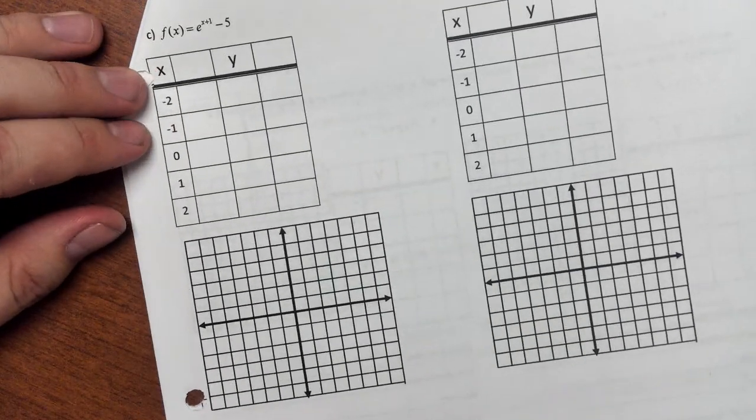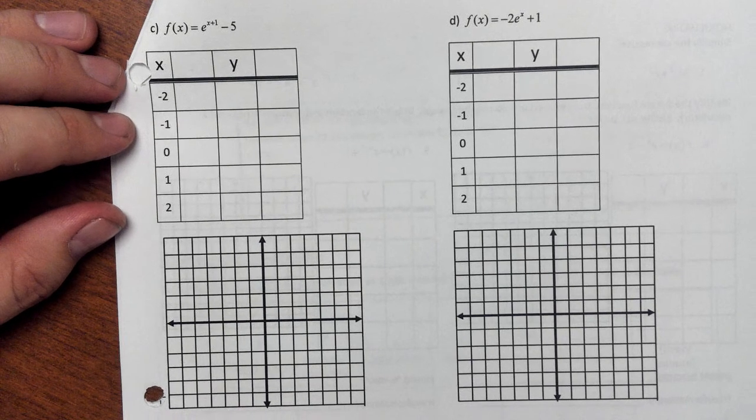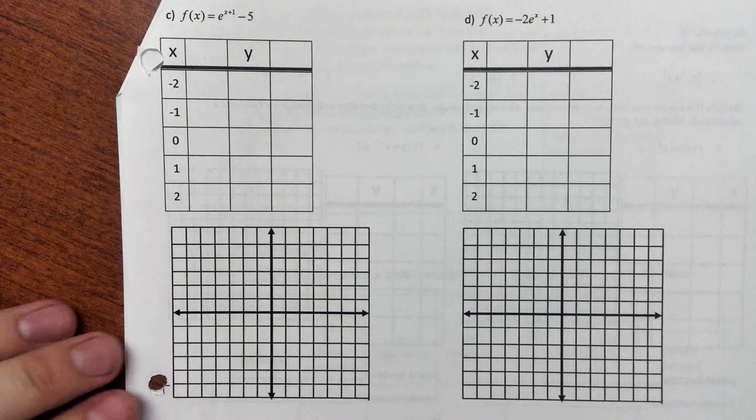When you graph your asymptote, remember, we have to know that it doesn't actually touch the asymptote. But the way we draw it, it's going to look like it does touch it. And again, it was just e to the negative x, so the asymptote was y equals 0. Alright, let's take a look at some transformations. For the next one, I have f(x) equals e to the x plus 1 minus 5.